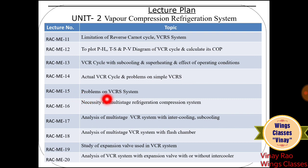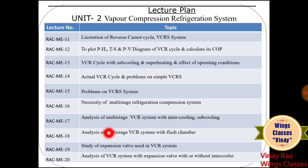Lecture 14 covers the actual Vapor Compression Refrigeration Cycle and problems on simple VCR systems. Lecture 15 covers more problems on VCR systems. Lecture 16 covers the necessity of multi-stage refrigeration compression systems. Lecture 17 covers analysis of multi-stage VCRS with intercooling and sub-cooling. Lecture 18 analyzes multi-stage VCR systems with flash chambers. Lecture 19 covers expansion valves used in VCR systems. Lecture 20 covers analysis of VCR systems with expansion valves with or without intercoolers.